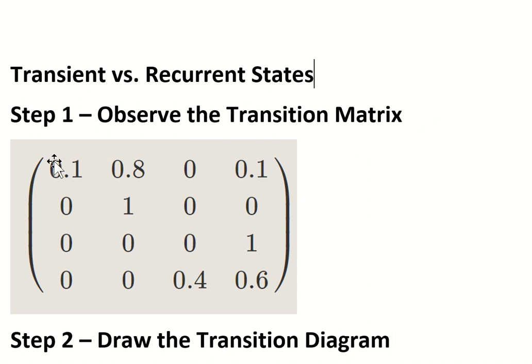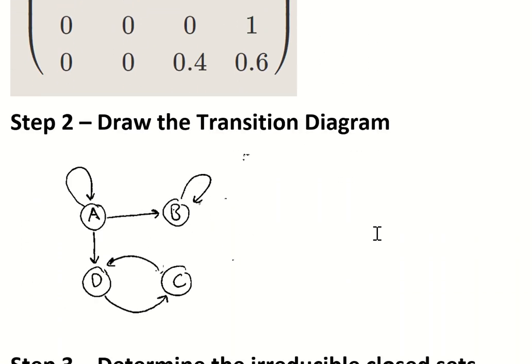You would know that A connects to A, A connects to B, and A connects to D, and so on. So the transition diagram would look something like this.